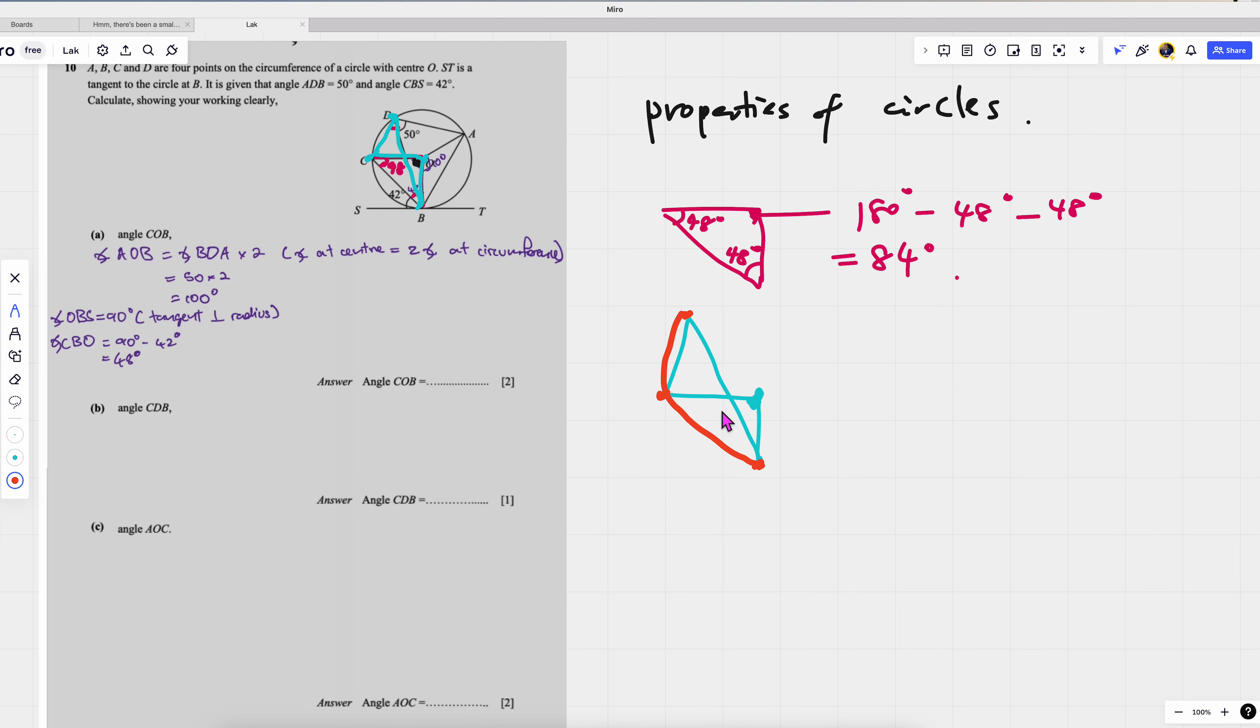Then this is the center O. Then I will look at it this way. So therefore this one will be angle at center, two times angle at circumference.